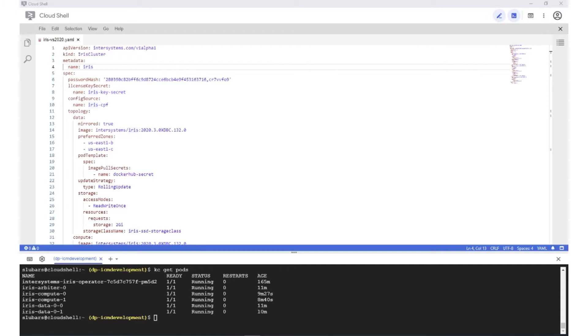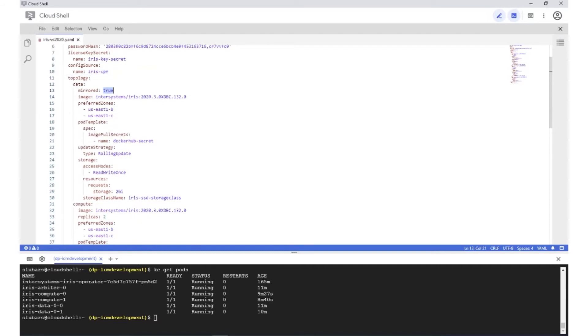The top half of the screen here is the YAML definition of the cluster. We have the kind iris cluster, which is a custom resource definition defined by the operator to extend kubernetes. A few other fields of interest: the cryptographic hash of the desired iris password, the iris license as a kubernetes secret, a config map containing overrides to the iris cpf file. Here in the topology section, under data, we have mirrored set to true. That means we're going to get two pods in our stateful set. The operator's anti-affinity rules guarantee that those pods will land on different nodes. Optionally, we have zonal anti-affinity, which will further guarantee that both sides of the mirror will be in different availability zones.